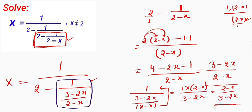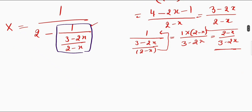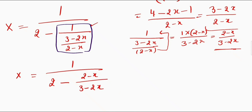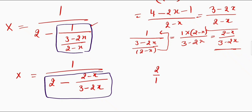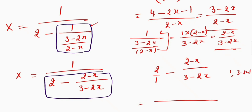I will put this value here. So I will get x is equal to 1 divided by 2 minus 2 minus x divided by 3 minus 2x. Next I will solve this part first. This is 2 divided by 1 minus 2 minus x divided by 3 minus 2x. Again we have to take the LCM of 1 and 3 minus 2x, so the LCM is 3 minus 2x.